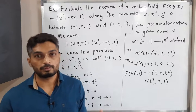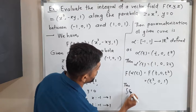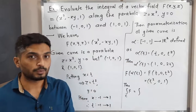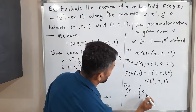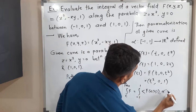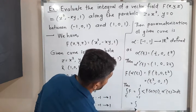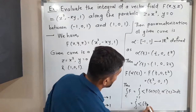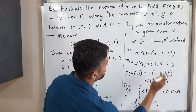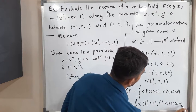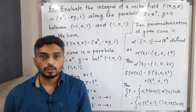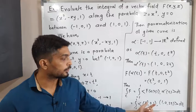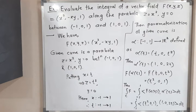Now we use the definition of the line integral of a vector field. The integral of F over C equals the integral from -1 to 1 of F(α(t)) · α'(t) dt. This is the integral from -1 to 1 of the inner product of F(α(t)) = (t², 0, 1) and α'(t) = (1, 0, 2t). We compute the inner product as first component times first, plus second times second, plus third times third.